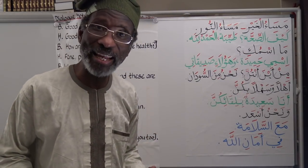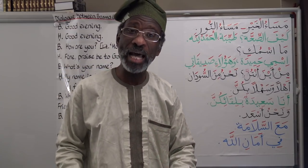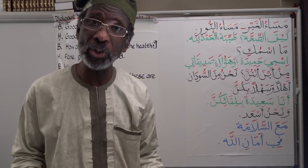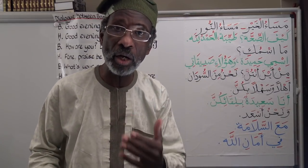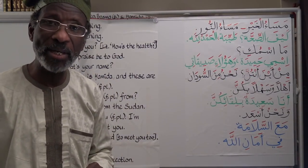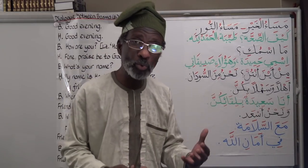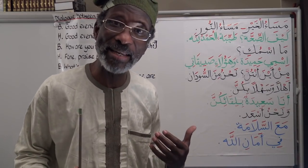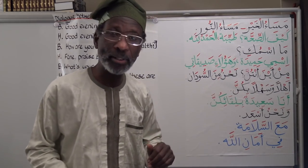'Ma ismuki?' — what's your name? Previously when directed at a boy we said 'ma ismuka', but here 'ma ismuki' is directed at a girl. The answer: 'ismi Hamida' — my name is Hamida. As a speaker, 'ismi' is gender neutral in Arabic — a boy or girl both say 'ismi.'